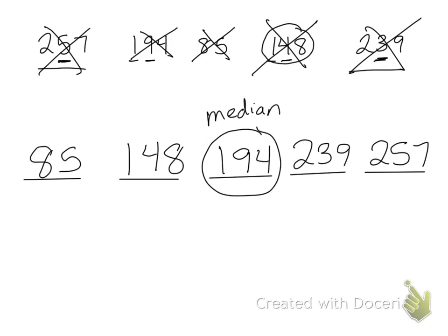That's how we order numbers from least to greatest and then find the median, or middle, of a set of numbers. And that's it for this lesson. Good luck on your homework.